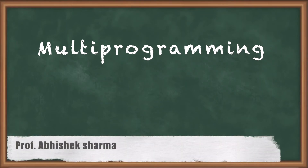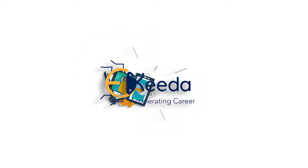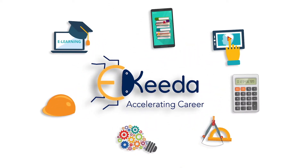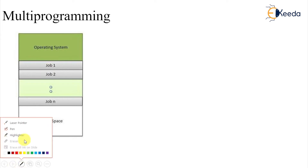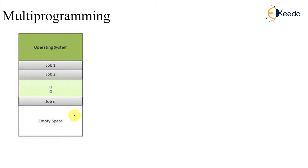In today's class we are going to talk about multi-programming. Multi-programming is a property of the operating system. Batch processing, spooling, and multi-programming are not necessarily in a strict order — it's just that some developments may have occurred earlier than others. So these are just properties of the operating system, and I may have referred to this property earlier as well.